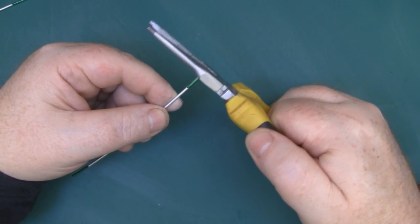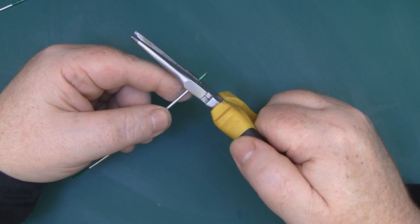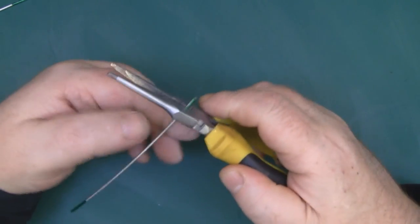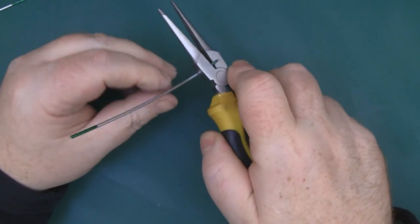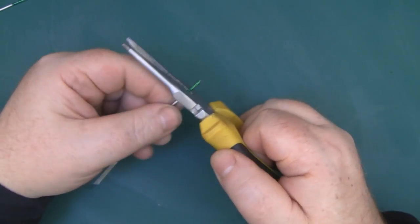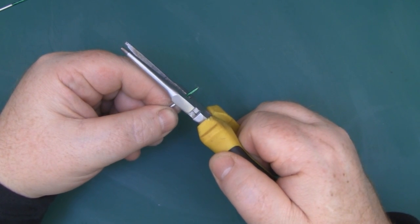I'm now ready to start putting my right angle bends into the wire. I put it up right against the mark there and then bend it in that direction. The other end of the wire gets bent in the opposite direction.